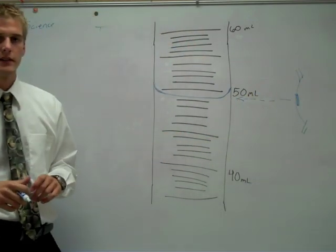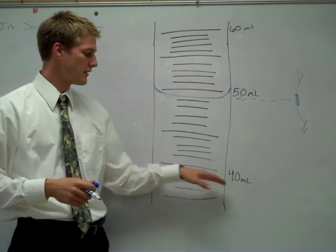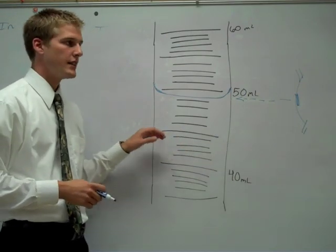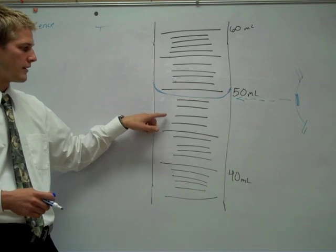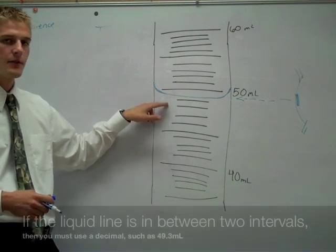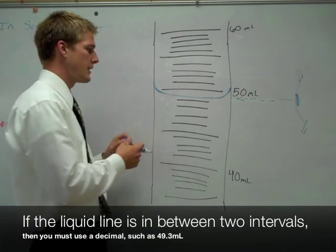When you read this, you know that the 40 is here. You go up five lines. 45, then you count individual graduations. 41, or 46, 47, 48, 49. 49 is right here.